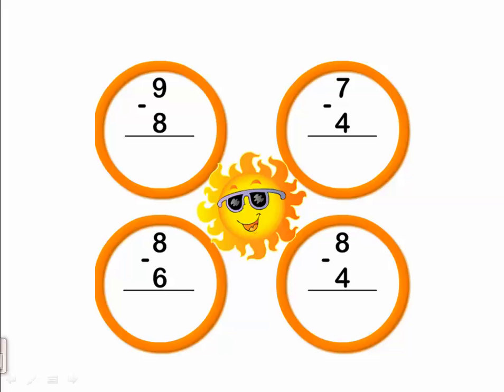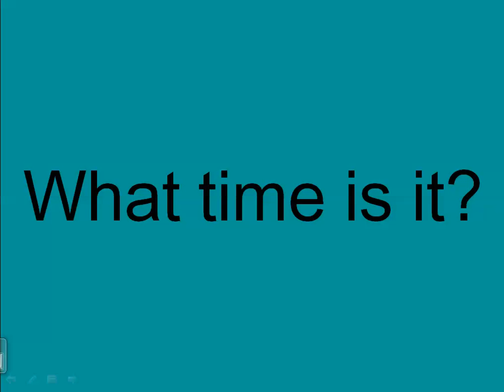Eight minus four. Which one is the smaller? The smaller number is four. We will count after four till eight. After four: five, six, seven, eight. How many are left? Four. So eight minus four equals four. We have almost finished the subtraction without objects.